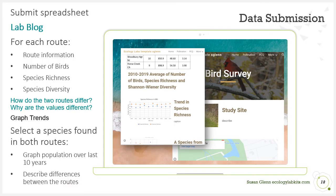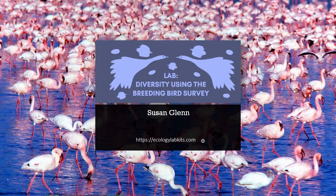I'll ask students to submit their spreadsheets with all the graphs and calculations and update their blogs. In the blog, include your route information for both routes, a chart with the number of birds, species richness and diversity index, and a discussion of how the two routes differ and why. Make sure you put full captions on all tables and graphs, include trend graphs of species richness and number of birds over time, and your graph of the species common to both routes over 10 years. The breeding bird survey is a wealth of information — great for writing a lab report.